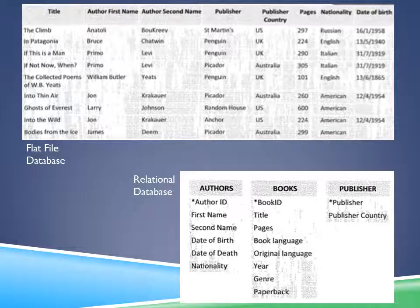Here's an example of a flat file database — the top one — where it has all the information stored in one table, which goes against the principle that a table should represent a single type of item. This information can be greatly condensed into a relational database where there are three items — books, authors, and publishers — in their own separate tables, with fields that relate to them.